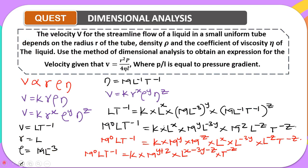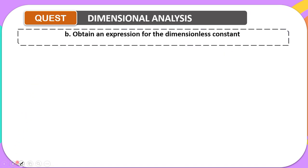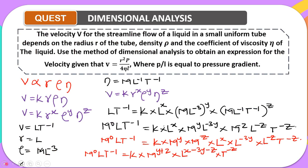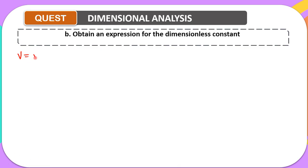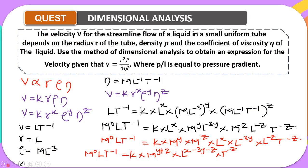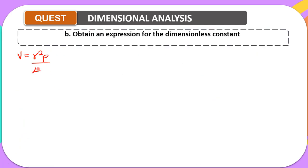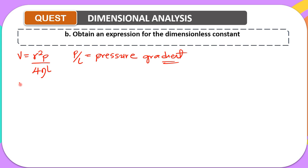The other part of the equation states that v equals r squared times p all over four times viscosity times l, where p over l is the pressure gradient. We have also established from dimensional analysis that v equals k times viscosity all over r times rho.